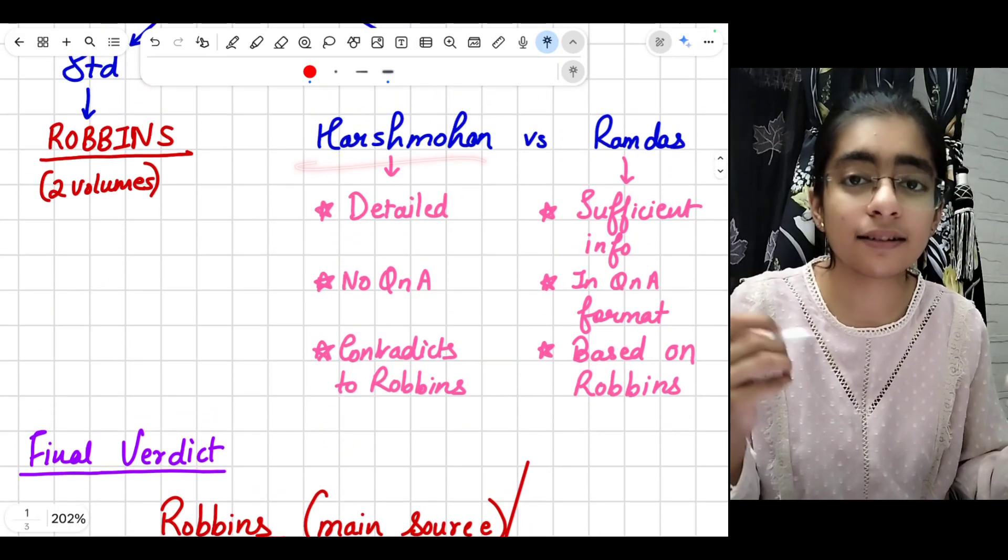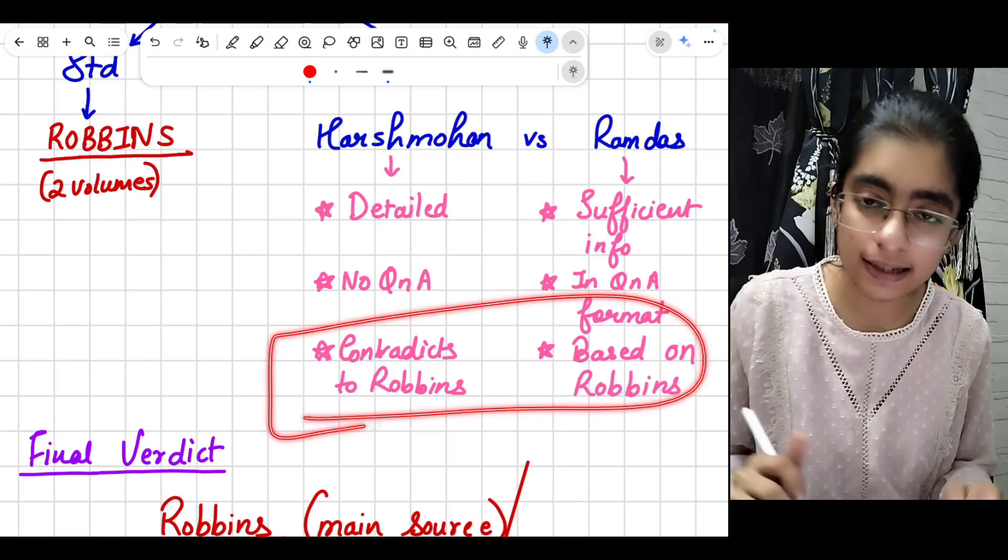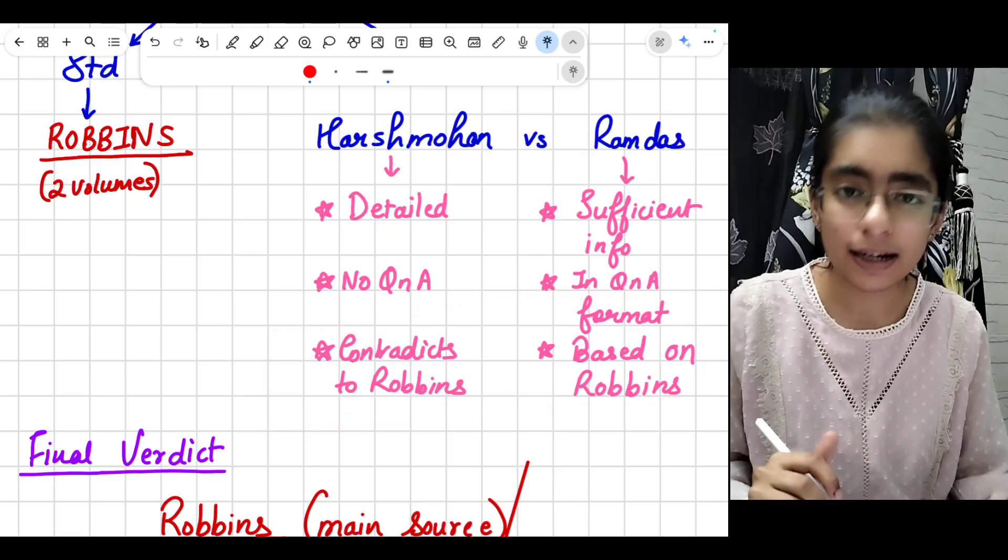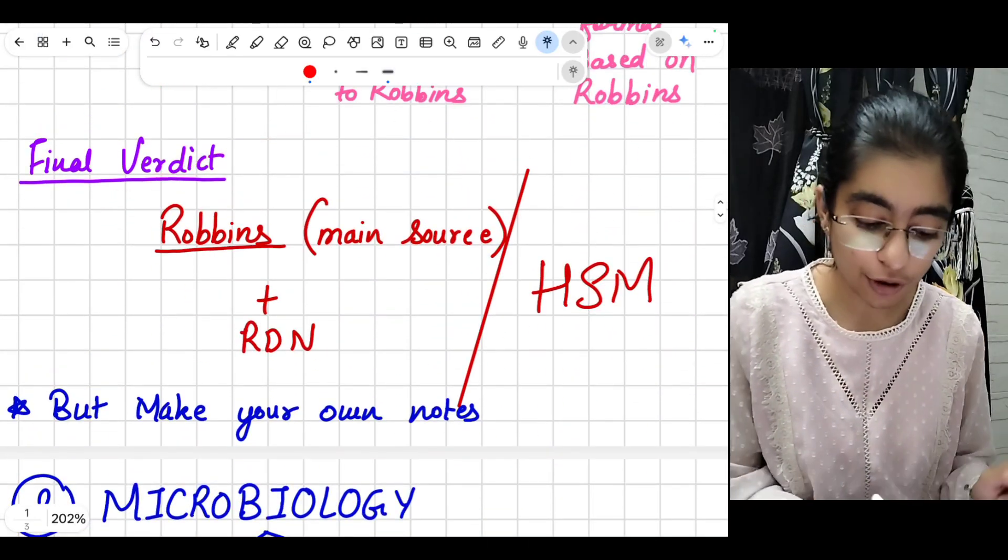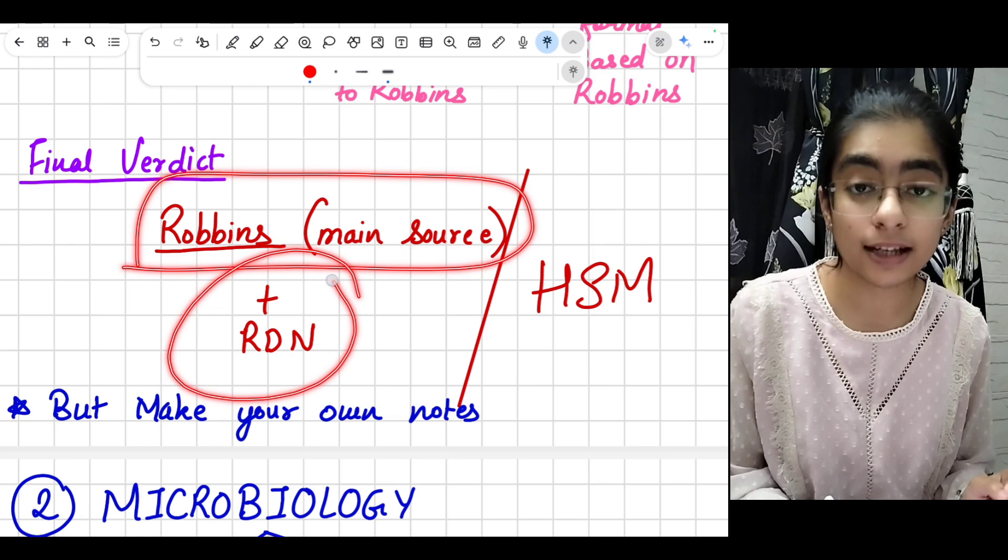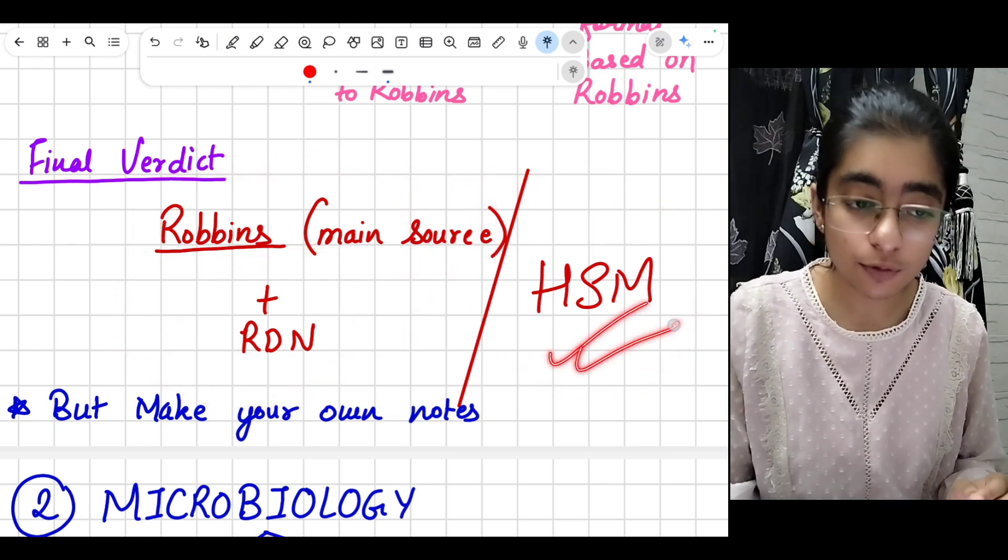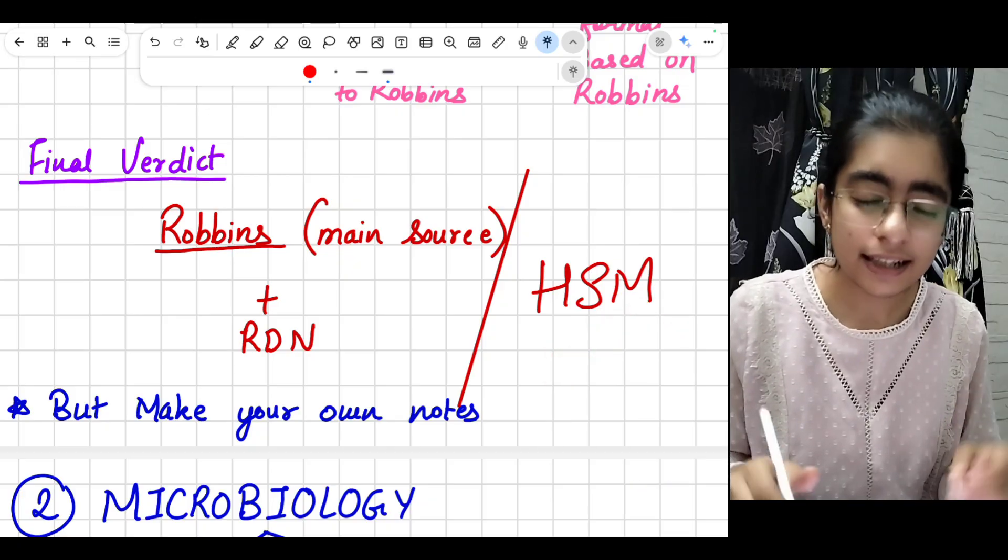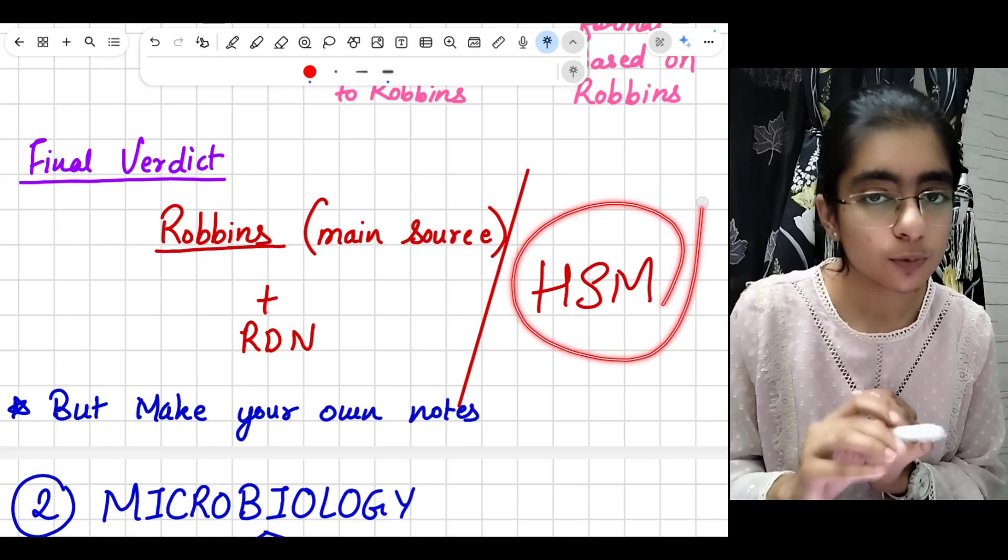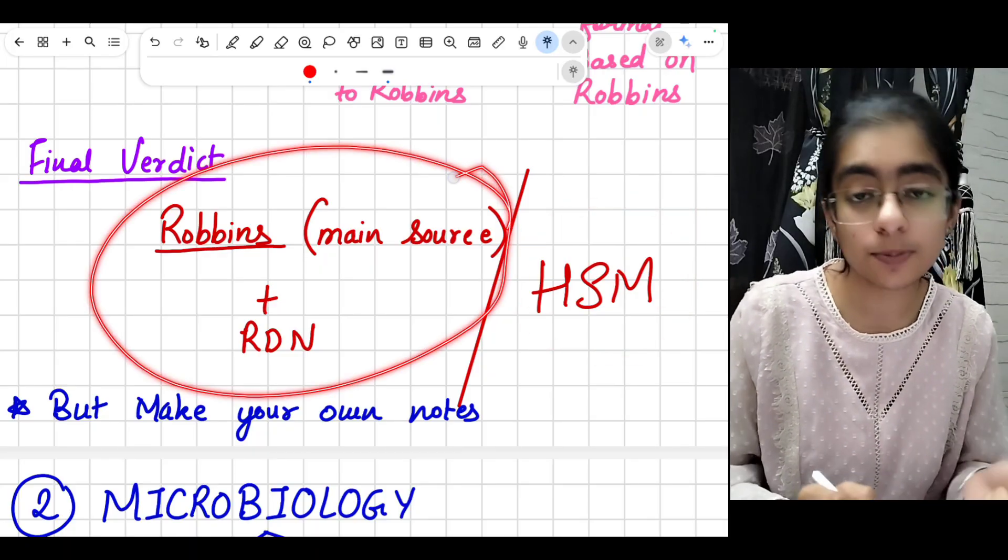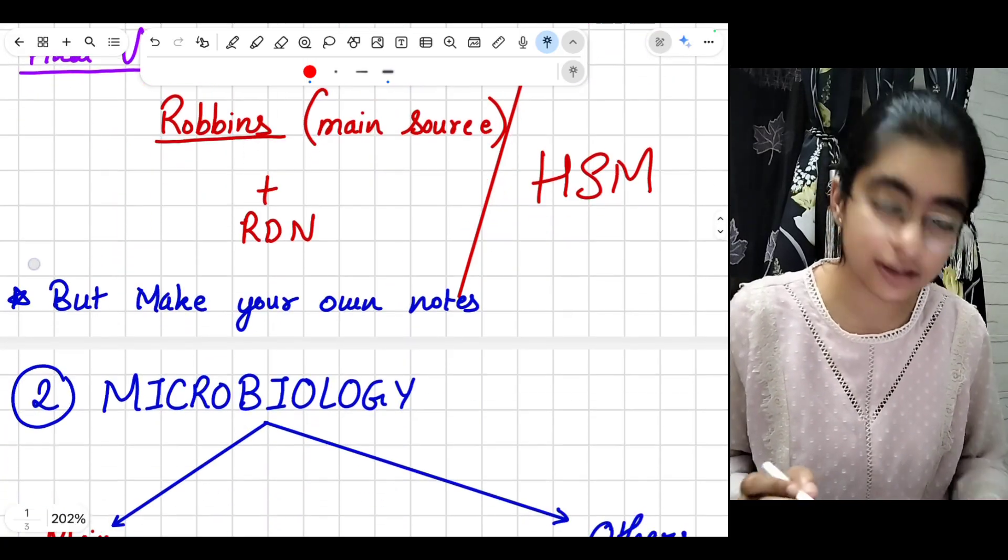I have heard that it contradicts to Robbins, but I don't think such opinions and such things would matter for us right now. So final verdict for pathology is Robbins as your main resource plus Ramdas. This is a combo, or Harshmohan, because Harshmohan is a bit detailed. If you follow that alone, it is better to follow one resource at a time. Robbins plus Ramdas Naik, and I would prefer personally this combination, which I actually preferred.